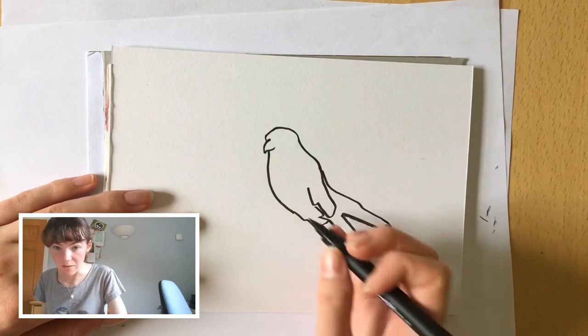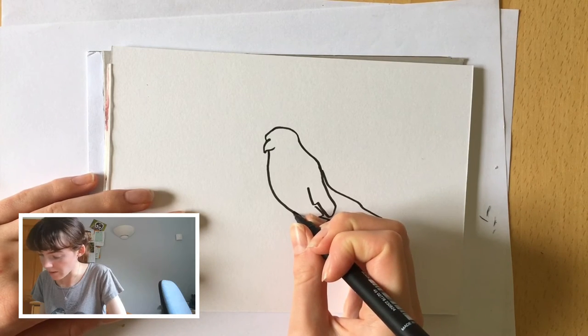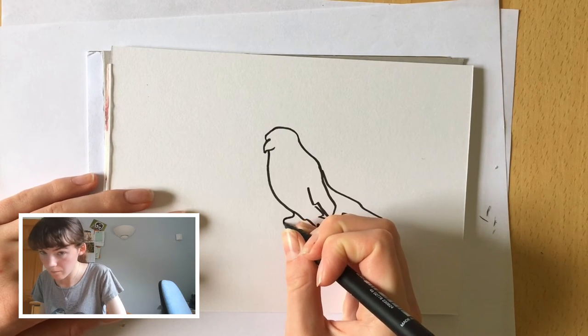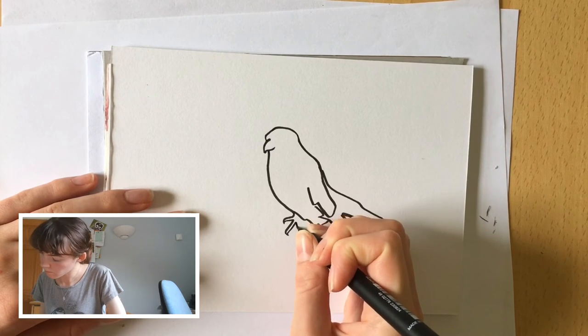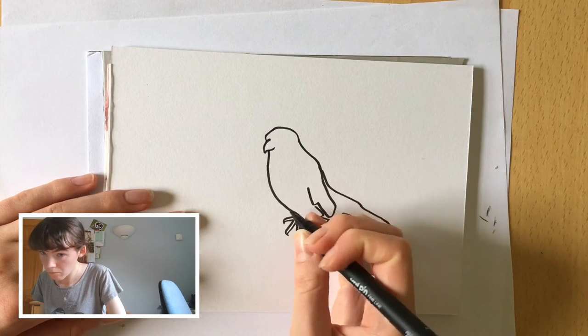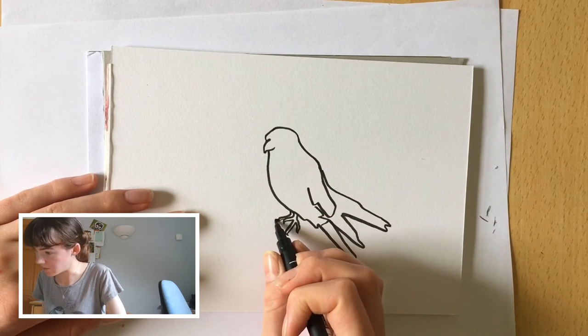And then we'll draw the feet of the falcon. So it's perching on a post, so we're going to draw them a bit like a fork shape. And then we'll draw the post that it's sitting on as well.